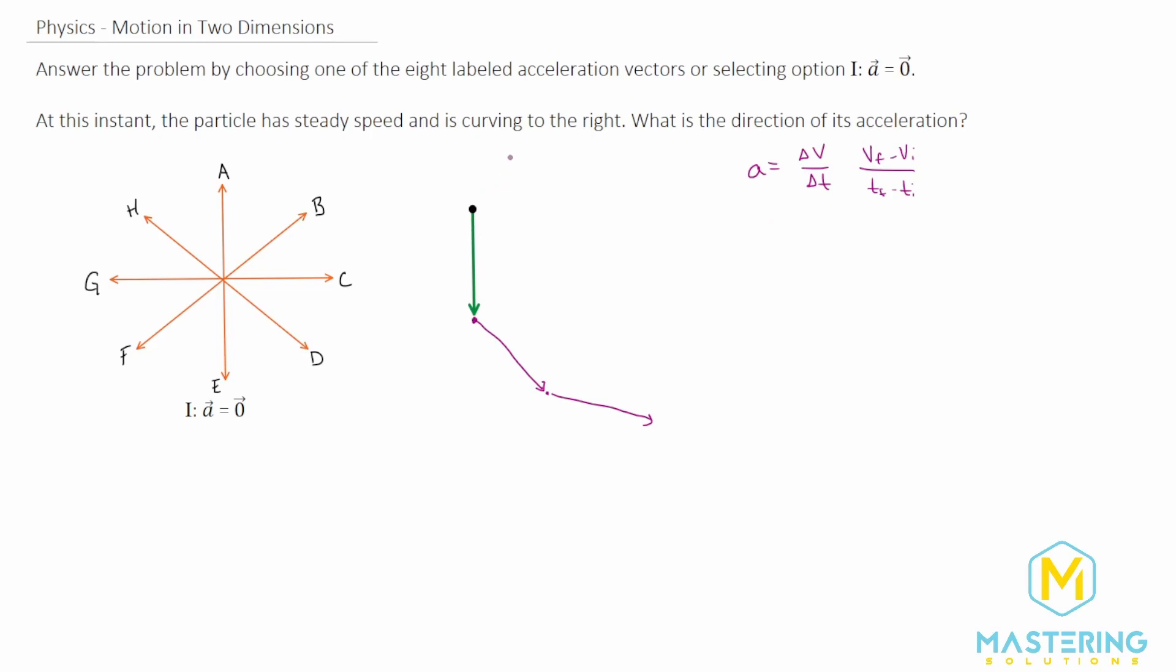Let's add one more velocity vector right before this. Since it's curving to the right, it's going to be going like this and curving this way. So now this will represent our initial velocity, and this will represent our final velocity for this spot in time.